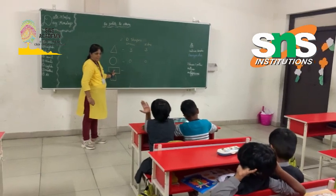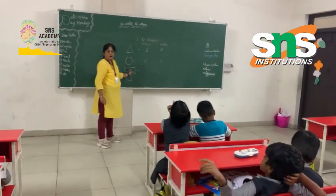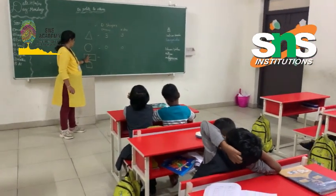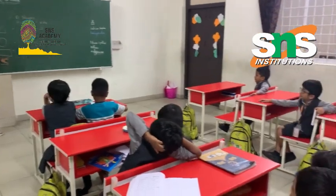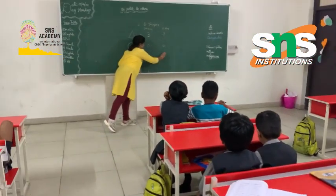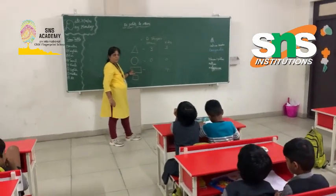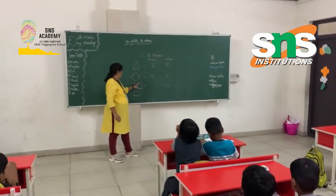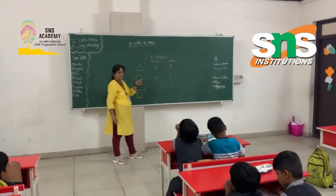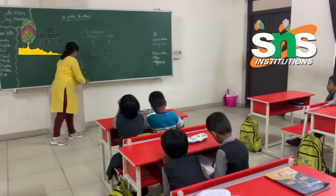Take this rectangle. It has how many sides? Four sides. You can see here — one, two, three, four. These are all the sides, so four sides. How many corners does it have? Four corners — one, two, three, four. Two lines are joining together, so four corners.